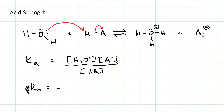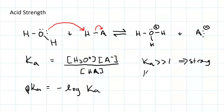pKa is just the negative base-10 logarithm of Ka. So if you have a Ka that's a large number, that's a really strong acid — Ka greater than 1 is very strong, and Ka much less than 1 is considered weak. In other words, the larger Ka is, the stronger the acid is. With pKa, since it's the negative log, the more negative pKa is, the stronger the acid is.